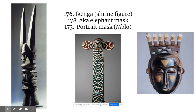My three pieces are the Aikenga, the shrine figure, which is a work from the Igbo people located in Nigeria. The elephant mask, which is a work of the Bamileke people in Cameroon. And the portrait mask, which is from the Baole people in Cote d'Ivoire, the Ivory Coast.